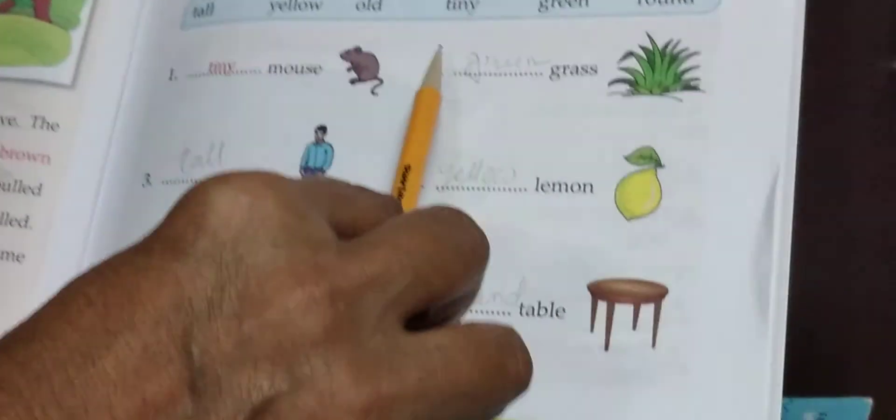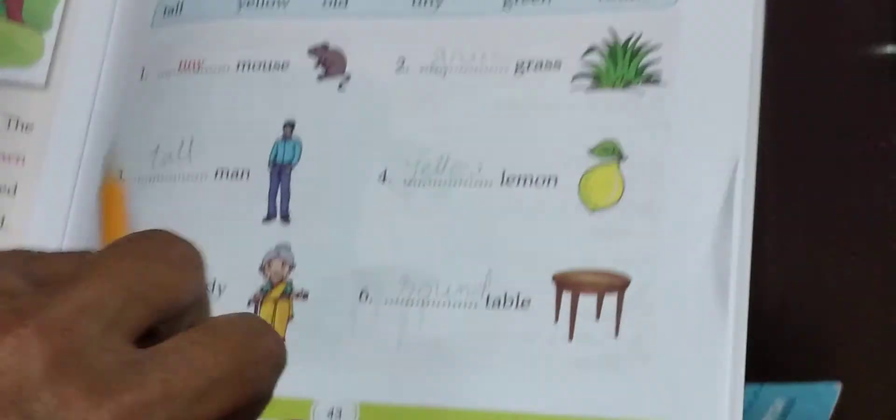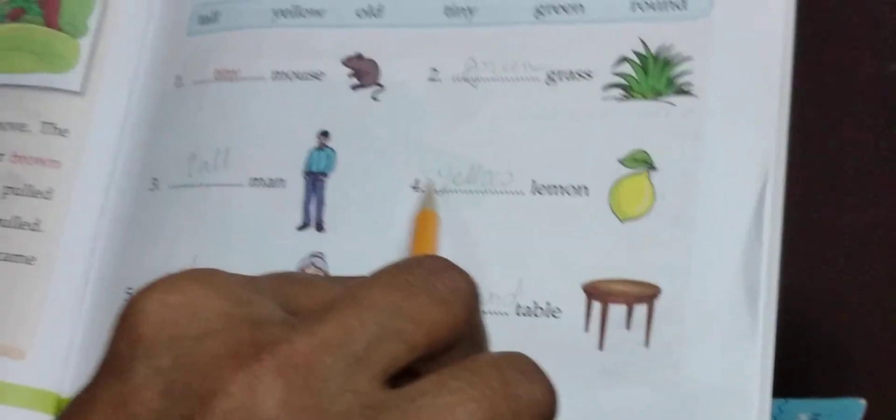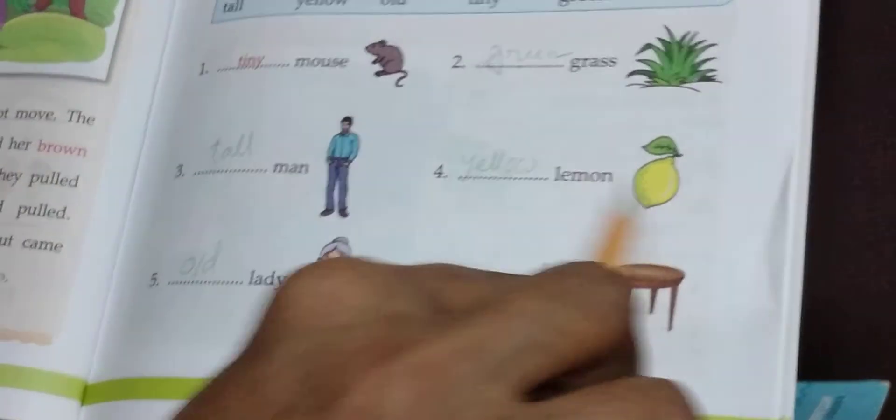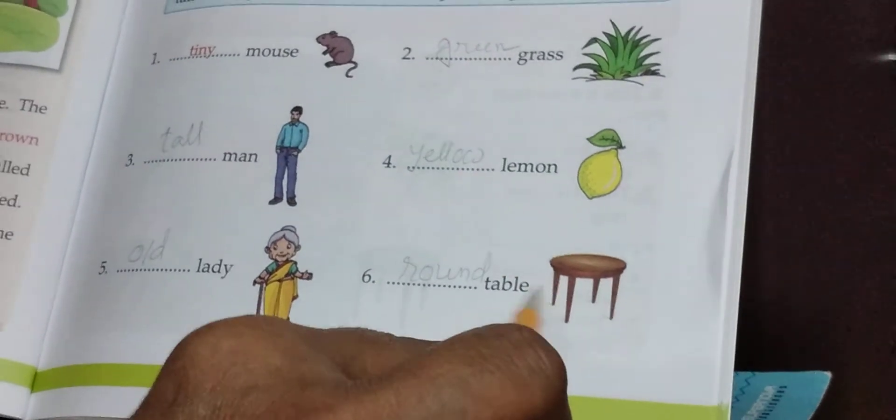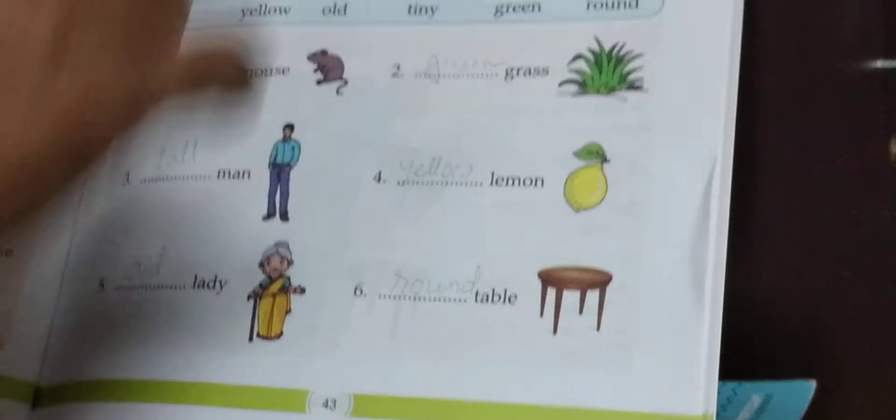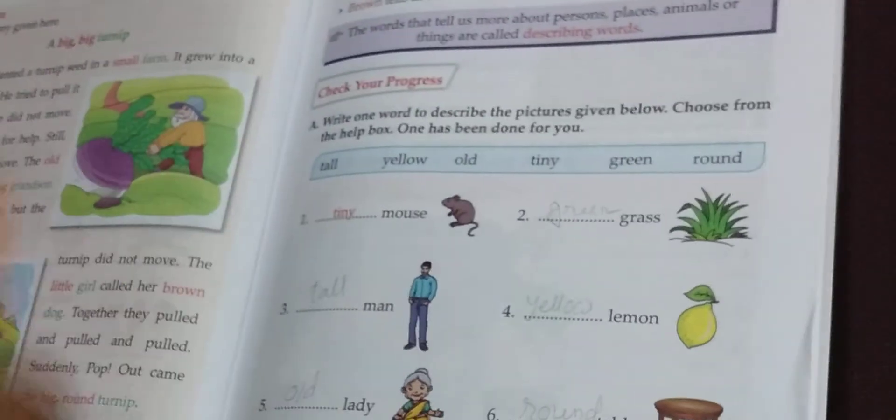Repetition again. Number one: tiny mouse. Number two: green grass. Number three: tall man. Number four: yellow lemon. Number five: old lady. Number six: round table. Students, very, very carefully look at the book, page number 42 and 43. Practice and read and learn at home.